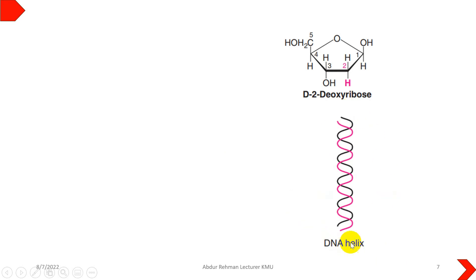That's why DNA reduces the reactivity of deoxyribose by removing oxygen at carbon number 2 position to avoid breakage.